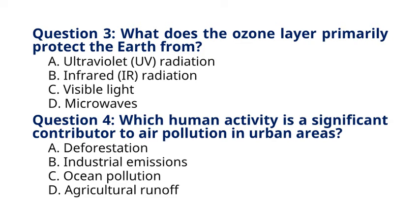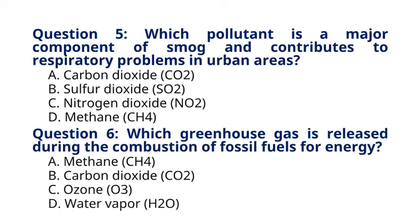Question 5. Which pollutant is a major component of smog and contributes to respiratory problems in urban areas? A. Carbon dioxide, CO2. B. Sulfur dioxide, SO2. C. Nitrogen dioxide, NO2. D. Methane, CH4. The correct answer to question 5 is option C. Nitrogen dioxide, NO2. Explanation: nitrogen dioxide, NO2, is a component of smog formed by the reaction of nitrogen oxides, NOx, with volatile organic compounds, VOCs, in the presence of sunlight, contributing to respiratory problems in urban areas.